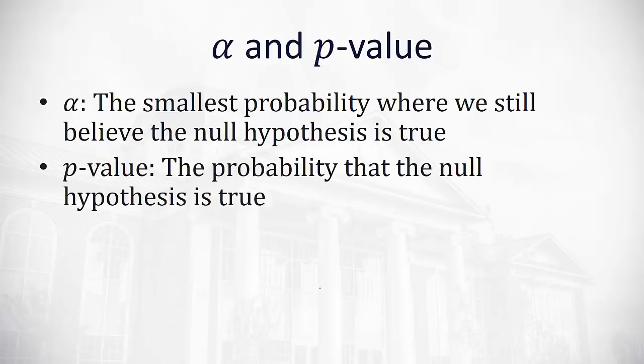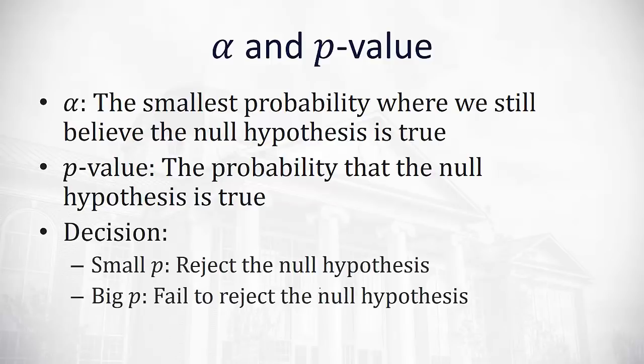We'll calculate the p-value, which is the actual probability the null hypothesis is true. And if that p-value is too small, smaller than alpha, we'll reject the null hypothesis. But if the p-value is bigger than the alpha, there's too much probability in favor of the null hypothesis, we have to fail to reject that null hypothesis.